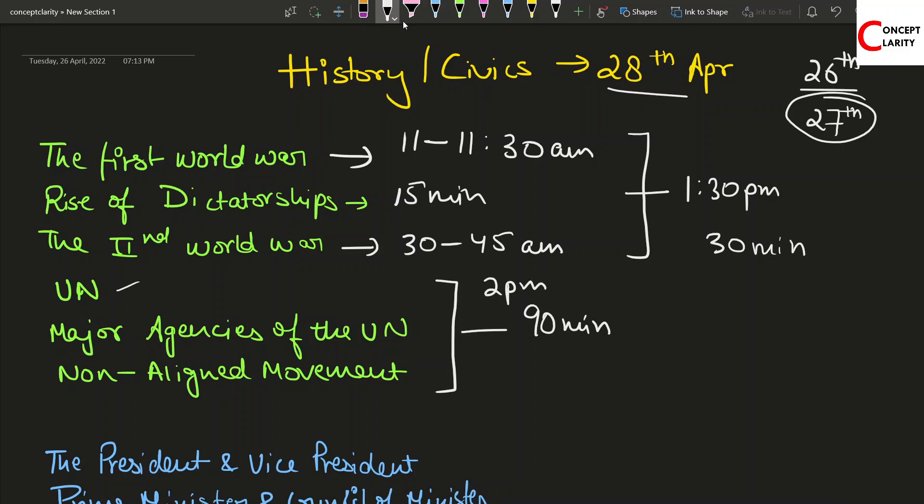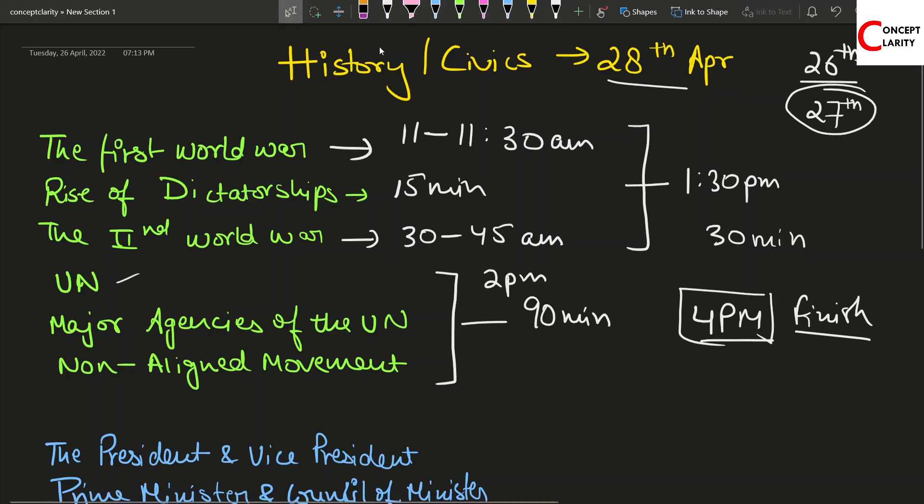From 2 PM you can take your 90 minutes, and if you thoroughly want to revise your last 3 chapters that you have done, by 4 PM you should finish your history civics. So from 11 to 4 you can finish your history. Then you can take one hour break and give a fresh start for civics at 5 PM.